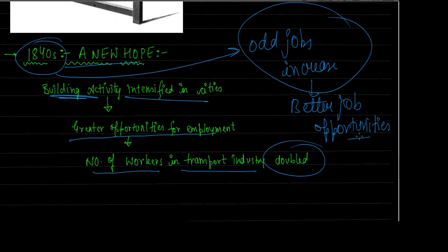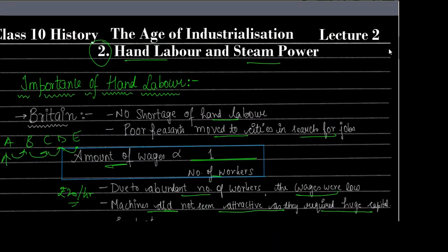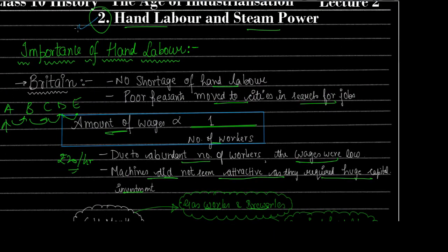Thank you friends. I hope that's absolutely clear. With this we are done with the second unit of the chapter 'The Age of Industrialization' — hand labor and steam power. We saw how machine use was minimal, hand labor was always preferred, and how when technology began to replace hand labor, workers became hostile. If you have any doubts, post them in the comments. Please like, share, and subscribe. Click here for the next lecture. Thank you and have a good day.